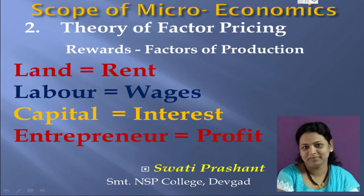The second scope is theory of factor pricing. The factors of production — land, labor, capital, and entrepreneurs — are unavoidable in the production system. Every factor claims its reward for its participation. For land used in production, rent is paid. For labor or workers, wages or payment is made. Capital invested in the production system gets its share in the form of interest. The entrepreneur gets profit.